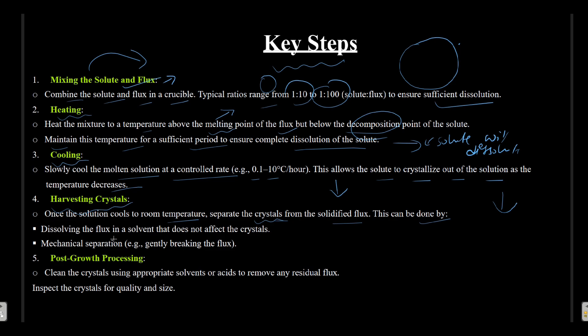There are two methods by which harvesting of crystals can be done. They are: dissolving the flux in a solvent that does not affect the crystal. So this flux with the solute or crystal is dissolved in a solvent where the flux gets dissolved but the solute is not dissolved.